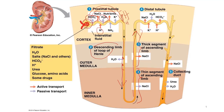In the thin segment of the ascending limb, sodium chloride — which became concentrated in the descending limb — diffuses out of the permeable tubule into the interstitial fluid. The movement of sodium chloride out of the tubule helps maintain the osmolarity of the interstitial fluid in the medulla.